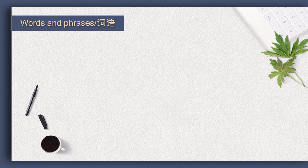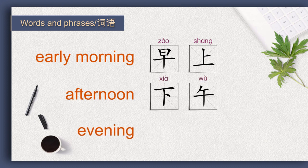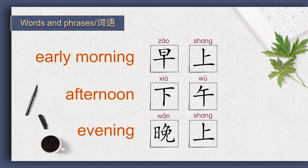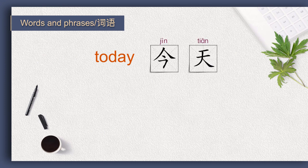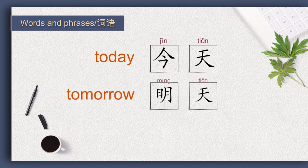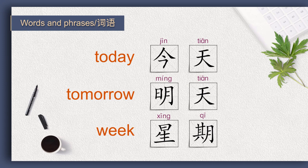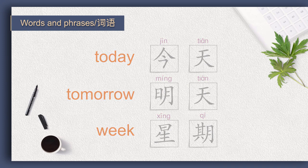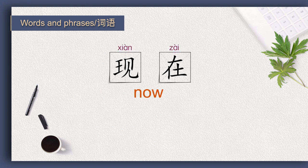We have learned many words about time. For example, early morning in Chinese is 早上, afternoon is 下午, evening is 晚上. We also learned that today is 今天, tomorrow is 明天, and week is 星期。 Now we will learn another word for time. 'Now' in Chinese is 现在。